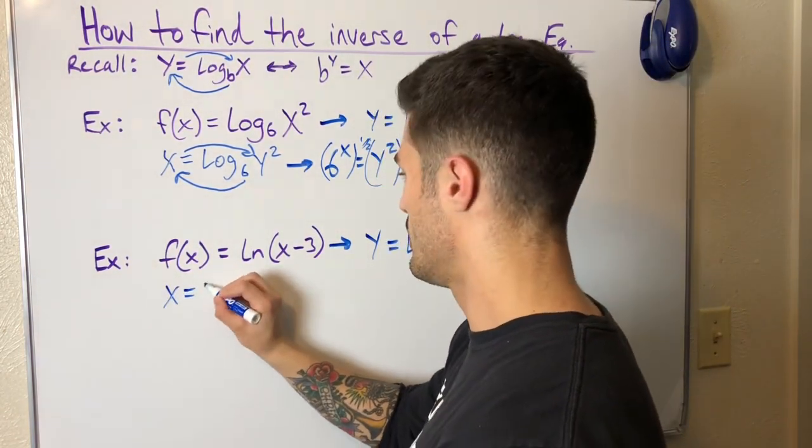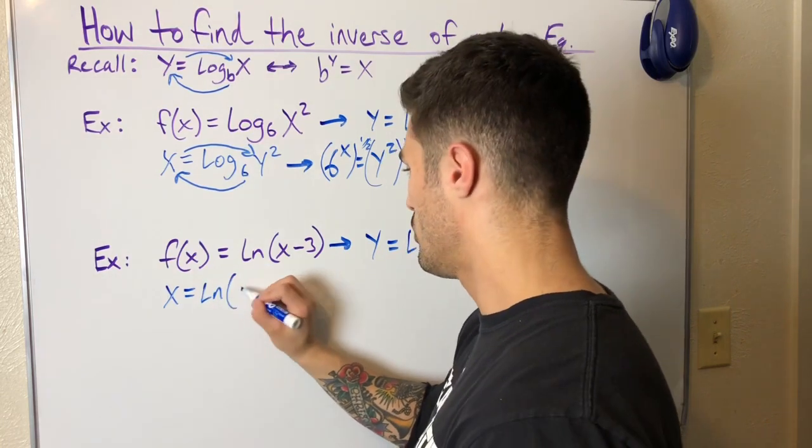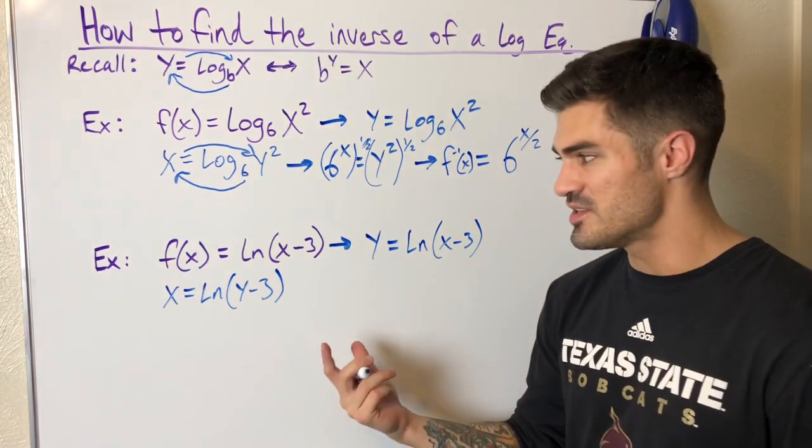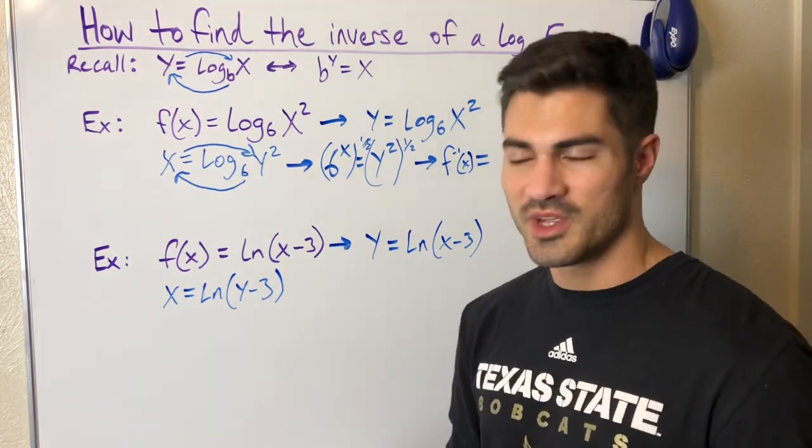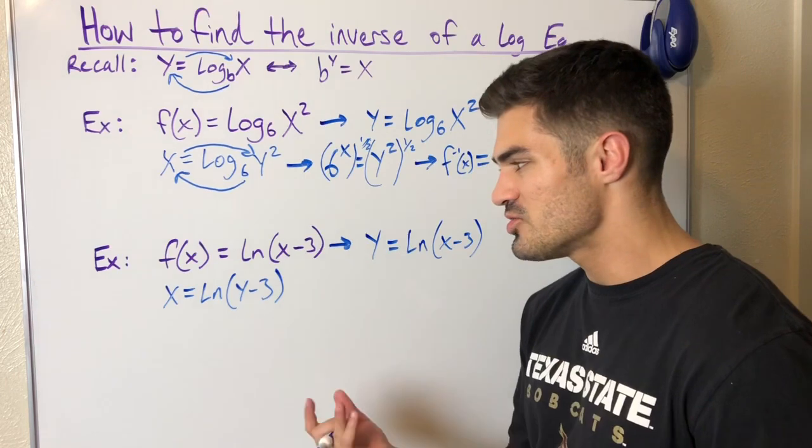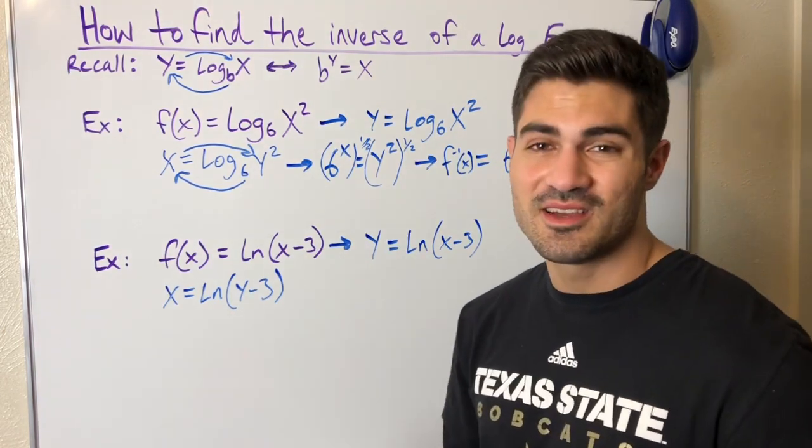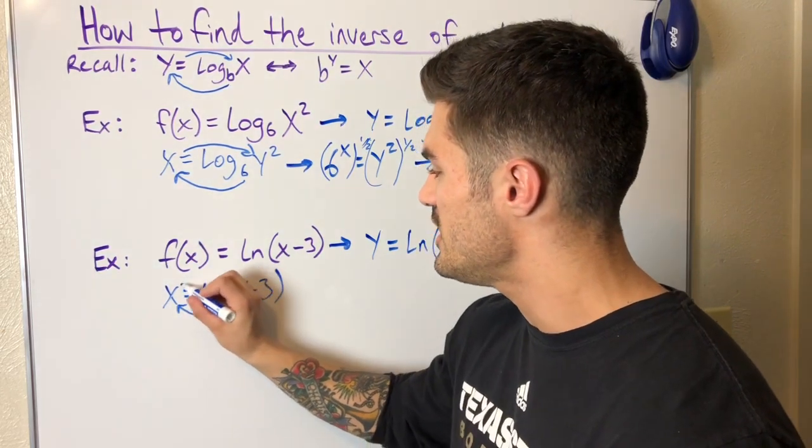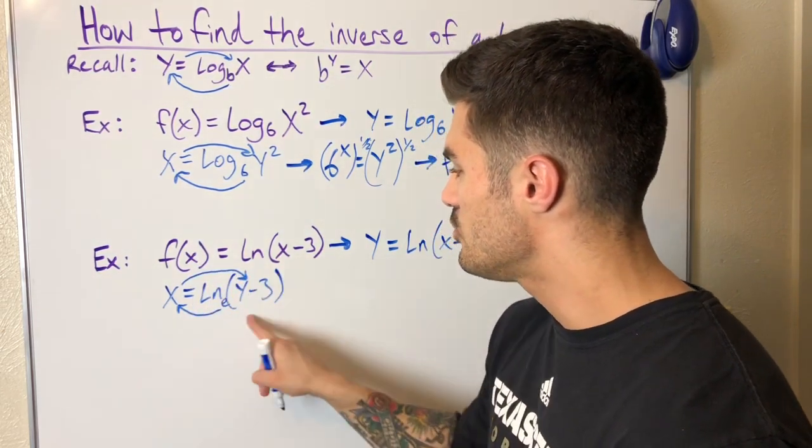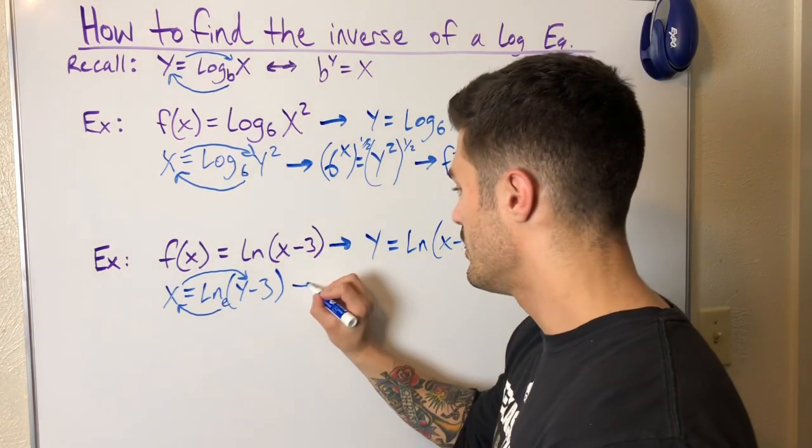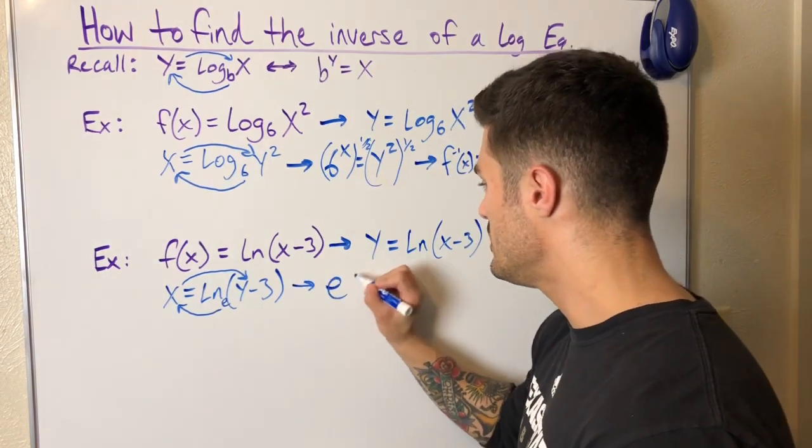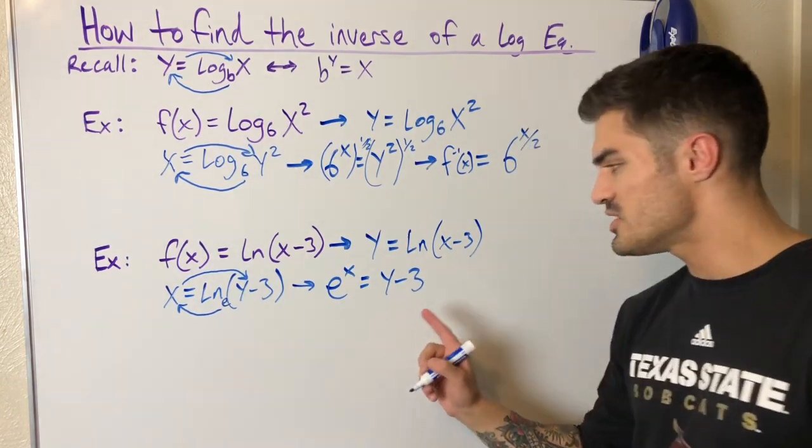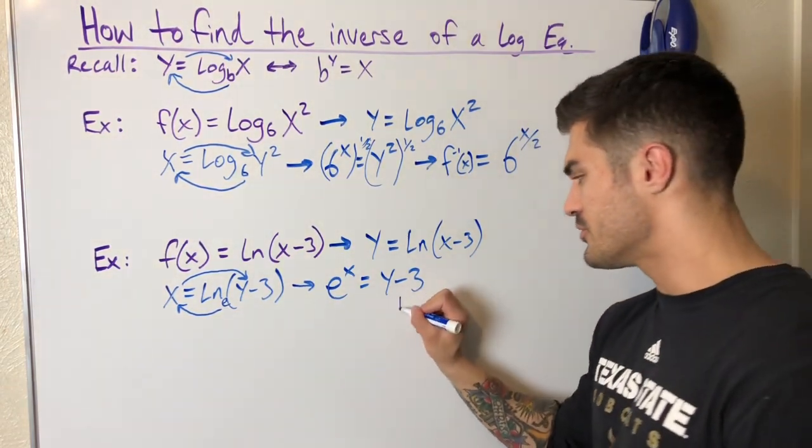x equals ln of y minus 3. Since we're dealing with ln, what is our base? ln is just a special logarithm base—it's log base e really is what it is. So we have an invisible e down here. When I draw my arrow, it's going to be e to the x equals y minus 3. This becomes e to the x equals y minus 3. Now it's pretty simple to solve for y. I can just add 3 to both sides.